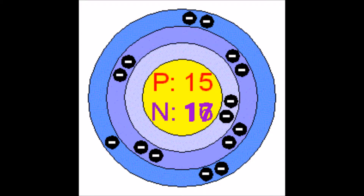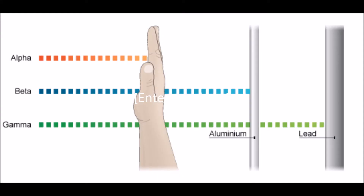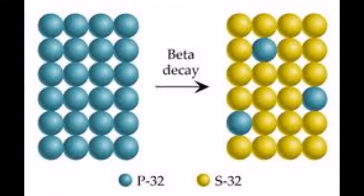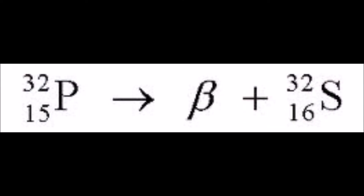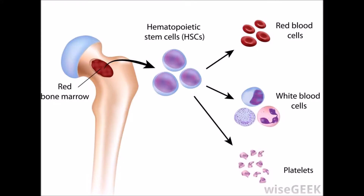Phosphorus-32 contains 15 protons and 17 neutrons. It emits beta radiation — a fast-moving electron emitted by radioactive decay of substances and penetrative to human skin. Phosphorus-32 decays into sulfur-32 to form stabilized nuclei.